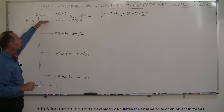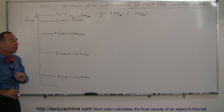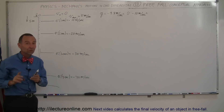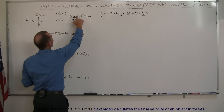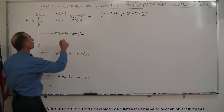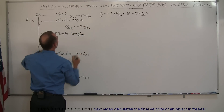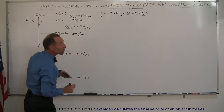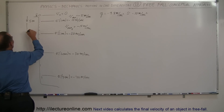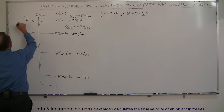What would be the distance that the object falls during the second second — between the beginning and the end of the second second? Using the same logic: it started out at minus 10 meters per second and ended at minus 20 meters per second. So the average velocity for the second second is minus 15 meters per second. That means it drops 15 meters during the second second, which means the total drop for the first two seconds would be a total of 20 meters.